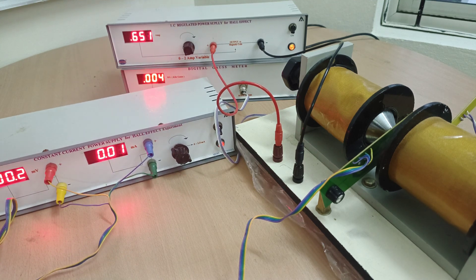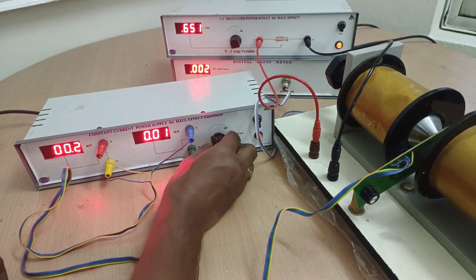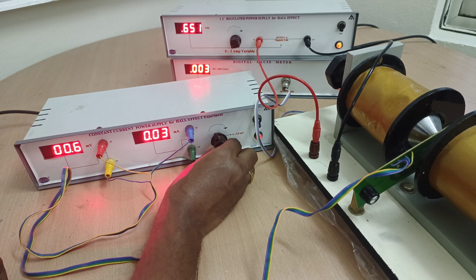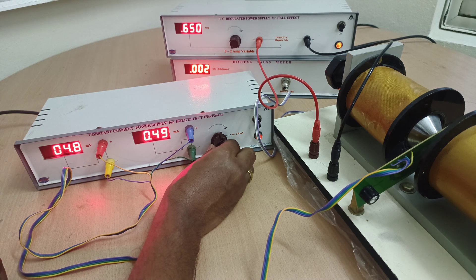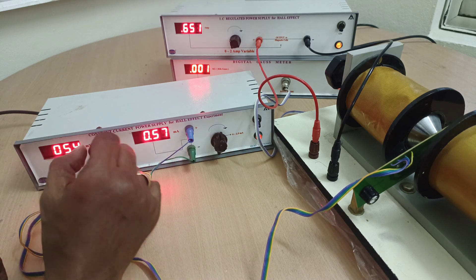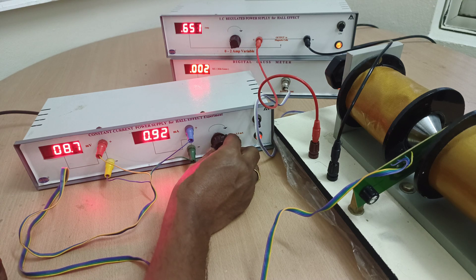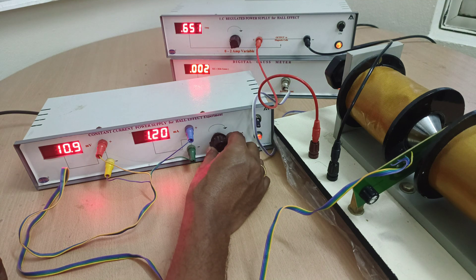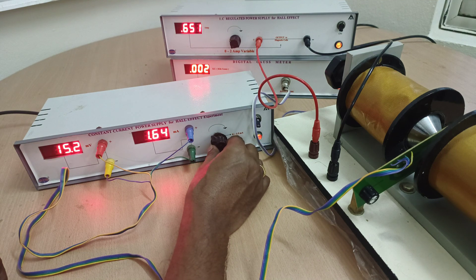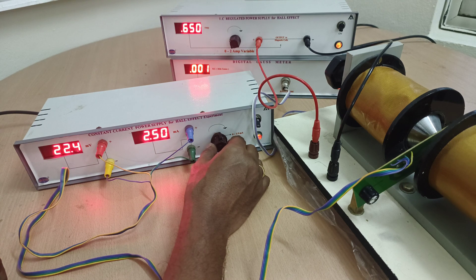Here you can see the reading. Now change the current value: 0.5, check the Hall voltage, note down that Hall voltage. For every 0.5 milliamperes note down the reading: 1, 1.5, 2, 2.5. So take 5 readings, 5 or 6 readings. Write all these readings in the tabular form.